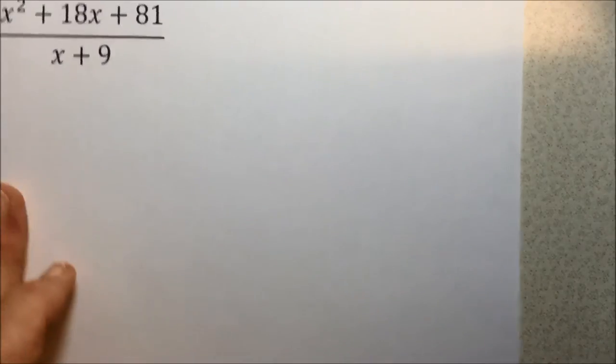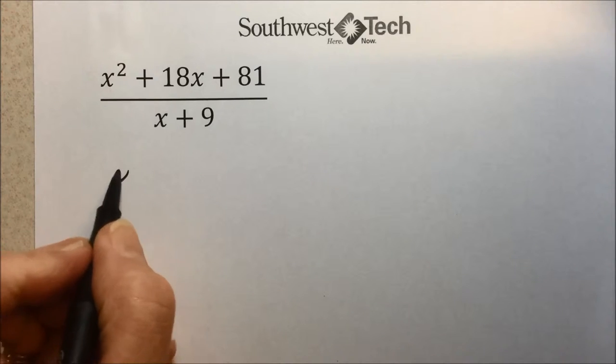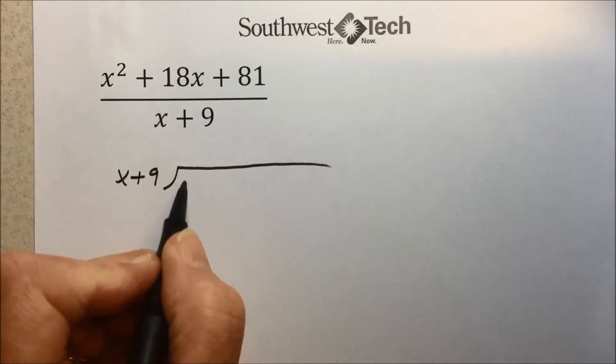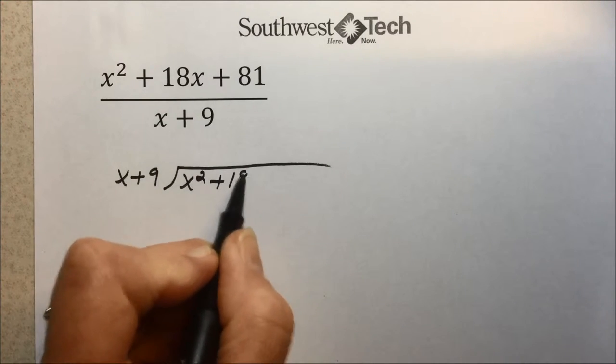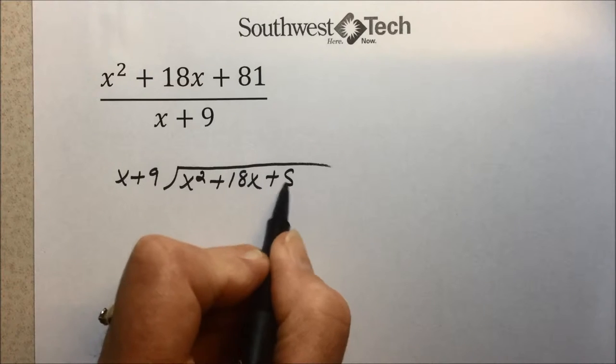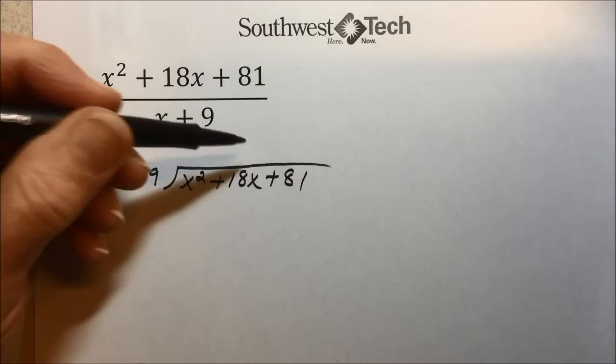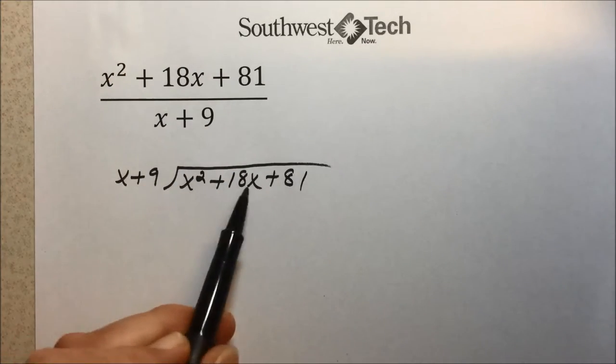So using that little refresher, here's our first polynomial divided by a polynomial. I'm going to set it up, similar to the long division of the integers that we just had. Here's our divisor. You do want to have your terms here in decreasing powers, and it was set up originally so that that is the case.